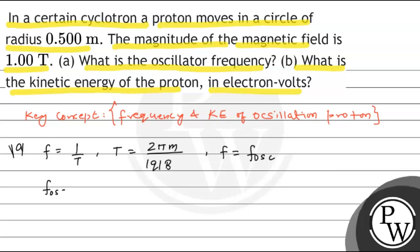Substituting the values: q = 1.6×10^-19 coulombs, B = 1.00 Tesla, divided by 2π times the mass of proton m = 1.67×10^-27 kg.